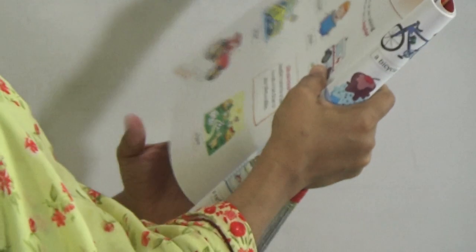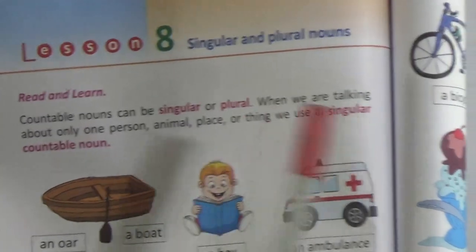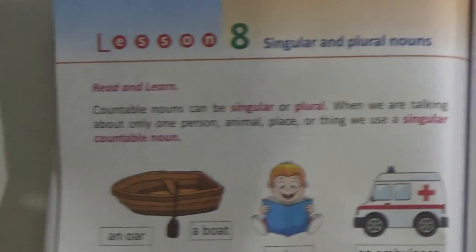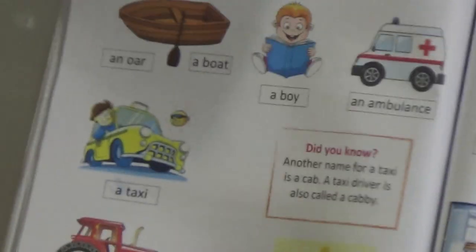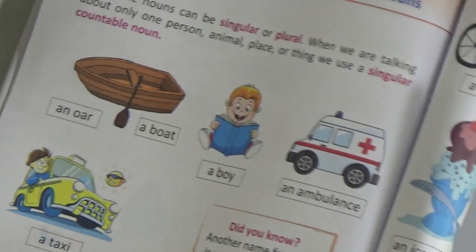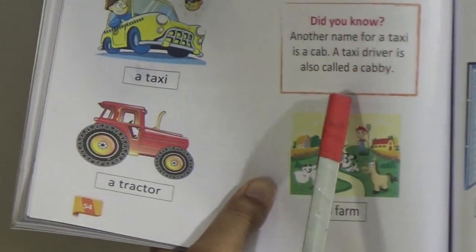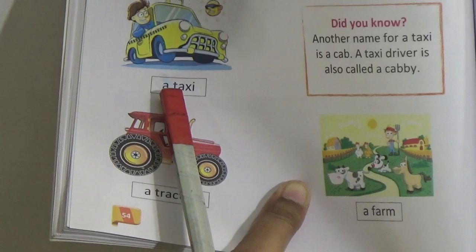Now we have to go to Lesson 8. Students, here we have to know about singular and plural numbers. That means when we are talking about only one person, animal, place, or thing, we use a singular countable noun. When we use only one animal, thing, or person's name, this is called the singular number. For example: a boat, a boy, an ambulance, a taxi, a tractor, a farm — just look, only one thing is here. A means one.